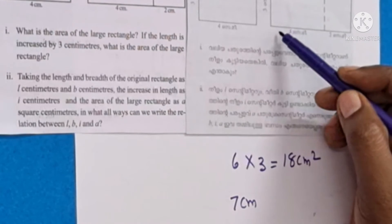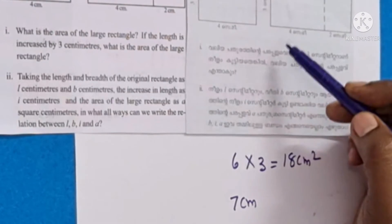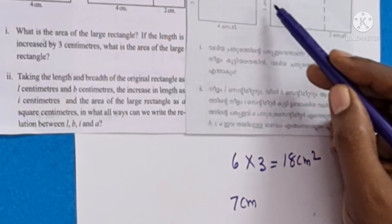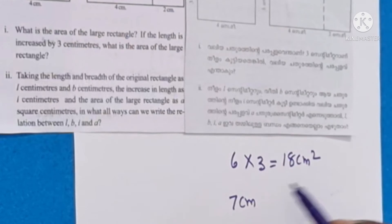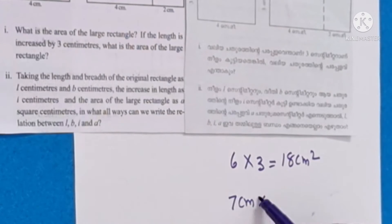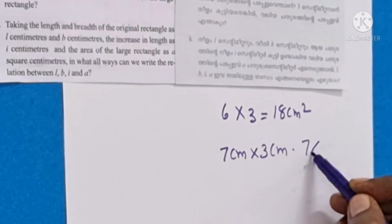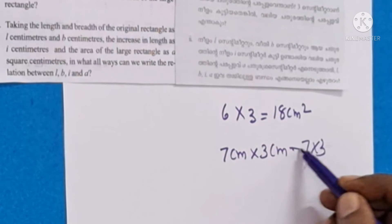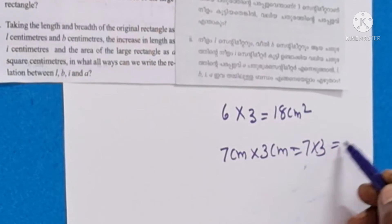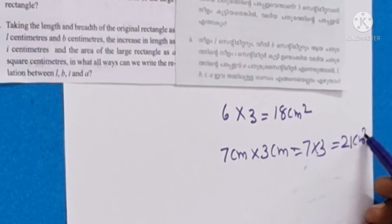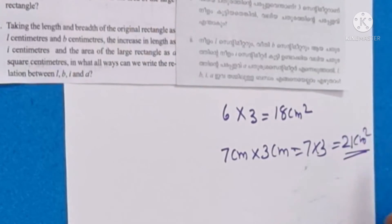The area of the large rectangle is equal to 7 times 3, which is 21 cm².